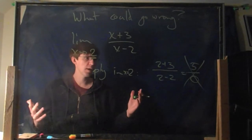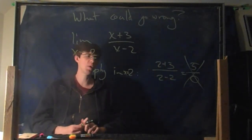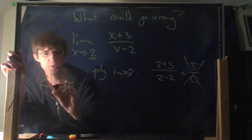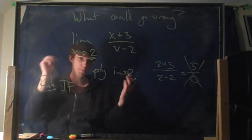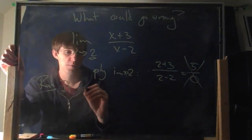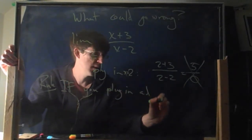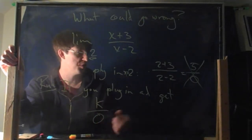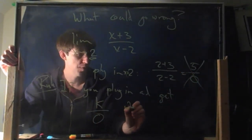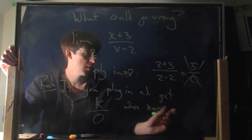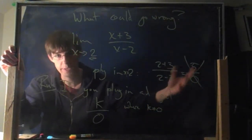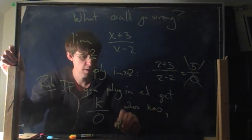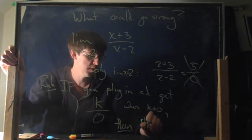You have to figure out what's supposed to happen in this case. It's not so hard, and there's a general rule. If you plug in and get something like a constant over 0 — where the thing on top is not 0, like 5 over 0 or 8 over 0 — then the limit does not exist.